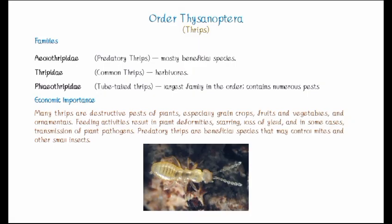Their families include, first, Aeolothripidae, which are predatory thrips and mostly beneficial species. They are beneficial because they are predatory — they control mites and small insects by feeding on them.